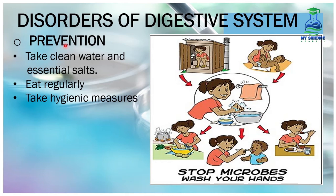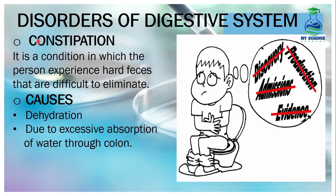Now, what are the preventions of diarrhea? Number 1, take clean water and essential salts — your body's water and salt intake should not be deficient. Number 2, eat a proper and balanced diet regularly. Number 3, take hygienic measures, like washing your hands before every meal and after use of the toilet every time. Now let's move to the second disorder of the digestive system — constipation.